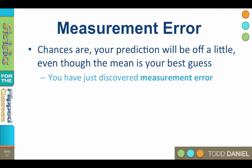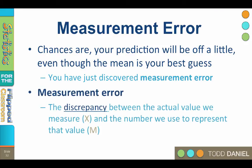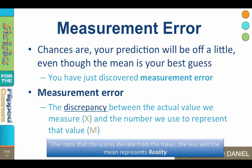We could call it measurement error. Measurement error is the discrepancy between the actual value we measure, X, and the number we will use to represent that value, M.